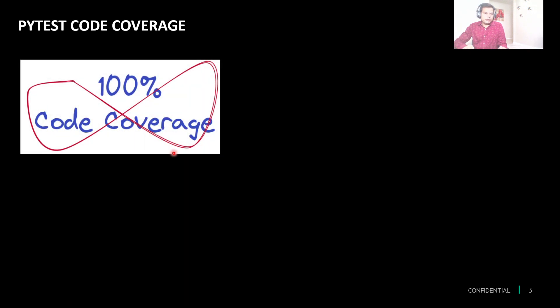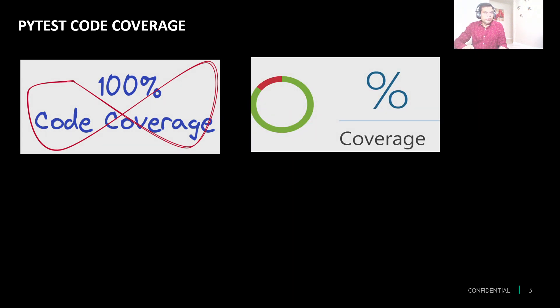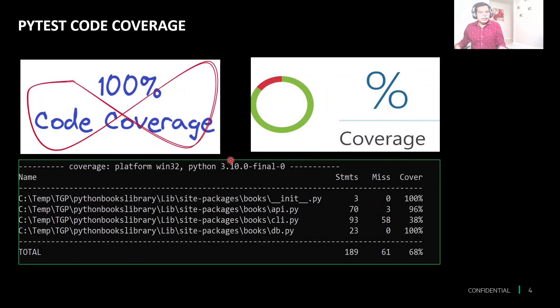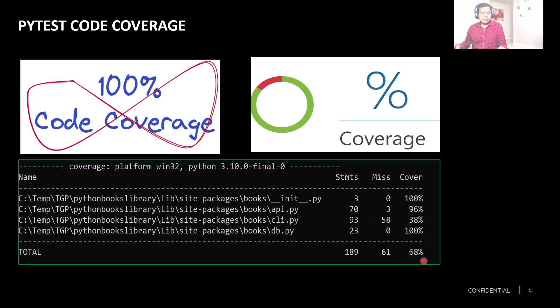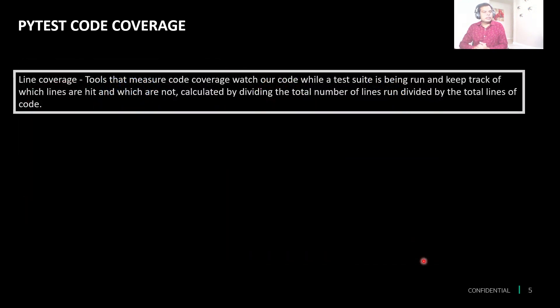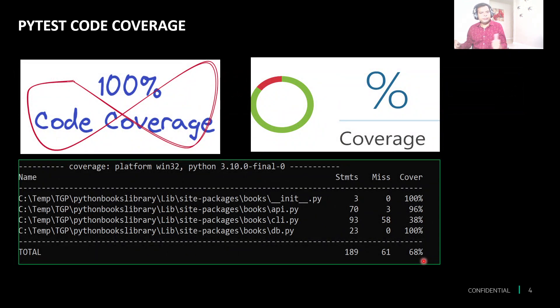These are very common questions asked in an interview: how much code coverage do you have? 100% coverage is good, zero percent is bad. To understand all these, we'll talk about all the numbers and how we calculate them. Looking at this report, we see numbers like 100%, 96%, 38%, and an overall project coverage of 68%. What does 68% mean? Is it good or bad? What should we be doing?